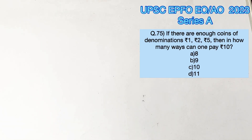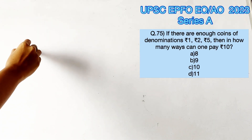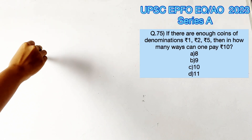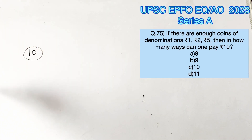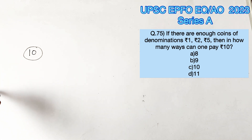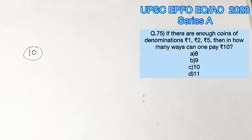Welcome to Aptitude Destination. Please pause the video and read the question completely. We are supposed to find the number of ways one can pay 10 rupees using the denominations 1 rupee, 2 rupee, and 5 rupees.